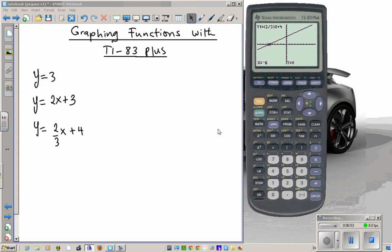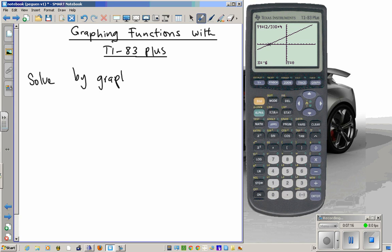Now, what if you wanted to find the intersection of two lines? Let's say you wanted to solve a system by graphing. You wanted to solve Y equals negative X plus 3 and Y equals X plus 3. If you solve this by graphing, you have to plot the two lines and wherever they intersect, that's your solution region. Let's see how we can use the graphing calculator to solve this.